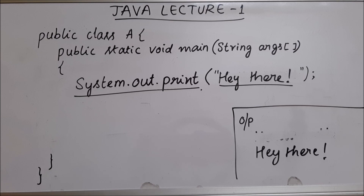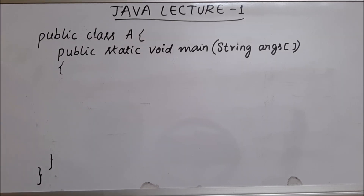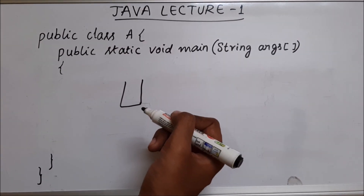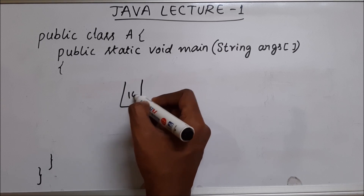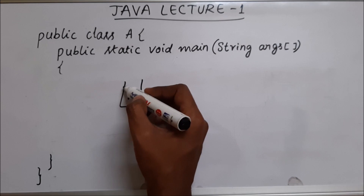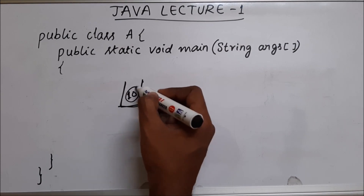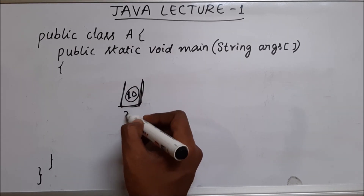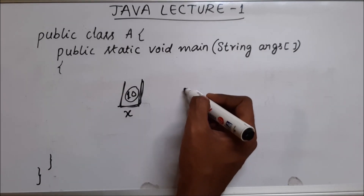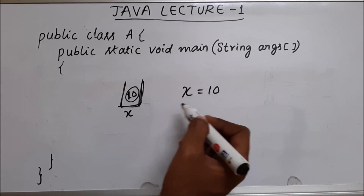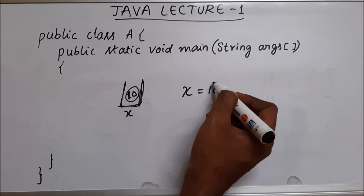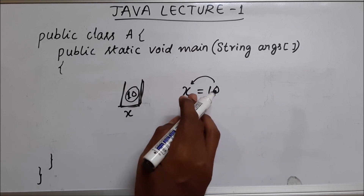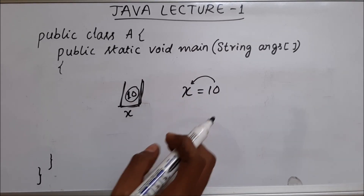Now let's move on to our next topic which is variables. Variables are like containers. Let's say we have a container and we want to put something inside it — let's say a value called 10. So this is a container which is having an integer value 10. This container should have a name, so let me name this container as x. In programming, what you will do is say x equal to 10, which means x is a variable given the value of 10. This 10 is assigned to variable x, and x acts as a container which will be present inside the memory.